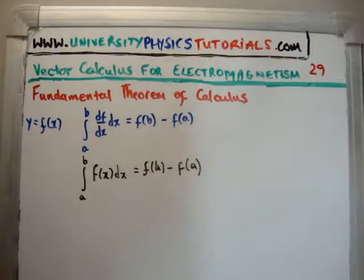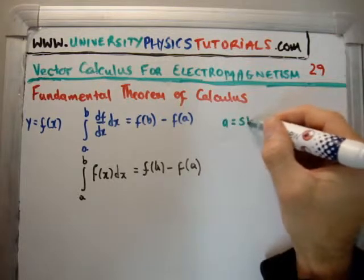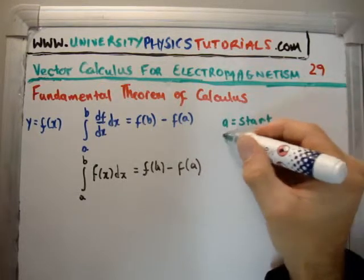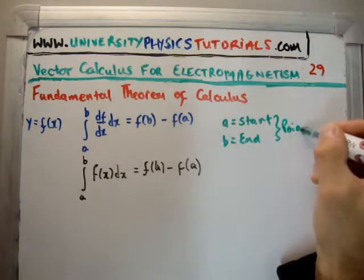Now, what are a and b? a is equal to the start, and b is equal to end. And these are both points, of course, they're points in space.